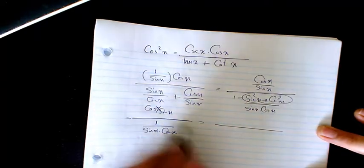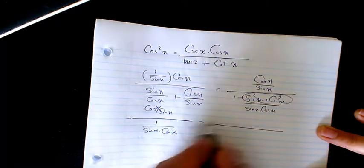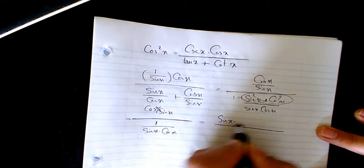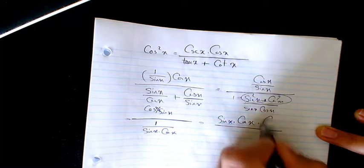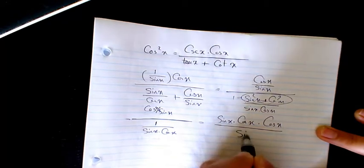Now what I can do, I can rearrange it. So this goes on top, sine x times cosine x times cosine x divided by sine x.